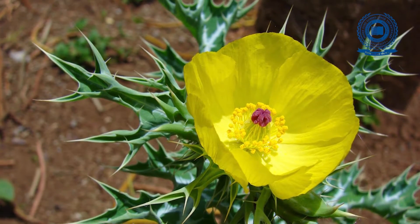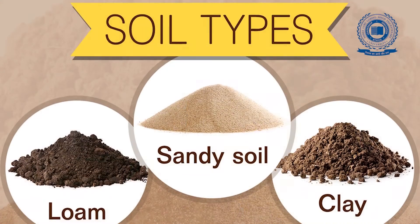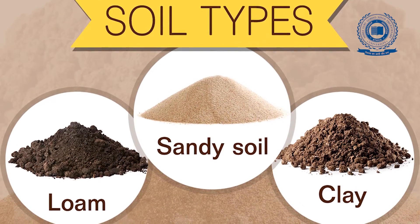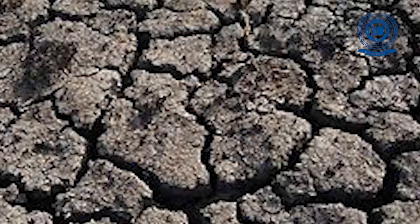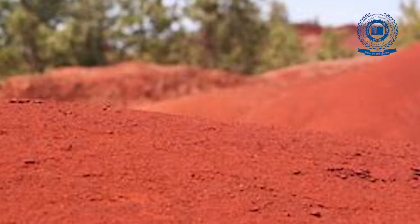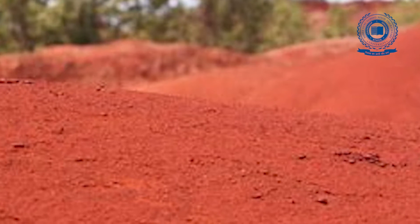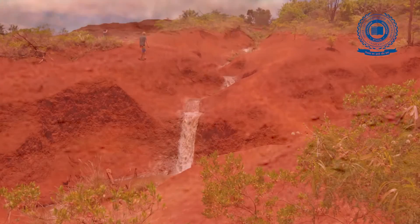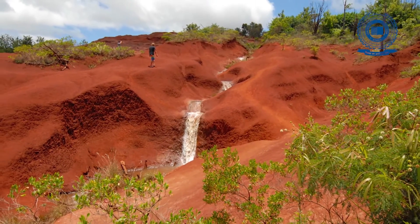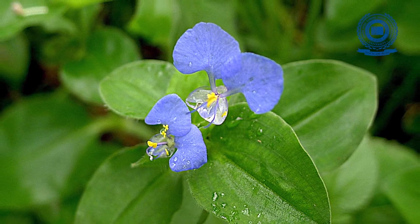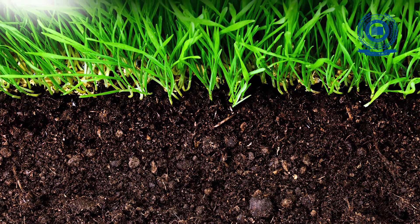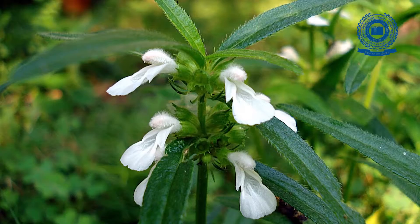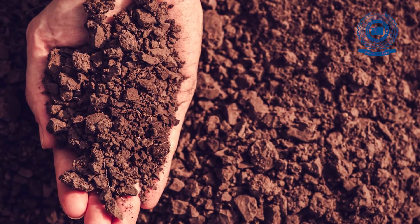Based on soil type: Weeds of black cotton soil are often closely associated with those that grow in dry conditions. Weeds of red soil are like the weeds of garden lands, consisting of various classes of plants. Example: Commelina benghalensis. Weeds of light sandy or loamy soils are weeds that occur in soil having good drainage. Example: Leucas aspera. Weeds of lateritic soils — example: Lantana camara.